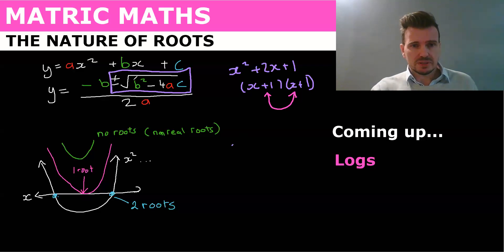So what we do is we call this underneath, this b squared minus 4ac, we call delta.